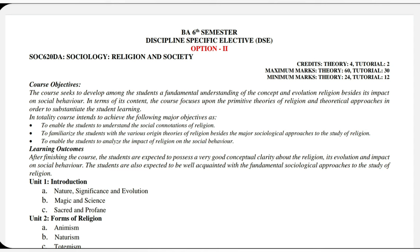So let us discuss BA sixth semester Discipline Specific Elective option second: SOC 620DA Sociology Religion and Society. You have six credits for 32 tutorials. Maximum marks for theory portion is 60, minimum marks for theory portion is 24, maximum marks for tutorial portion is 30, and minimum marks for tutorial portion is 12.